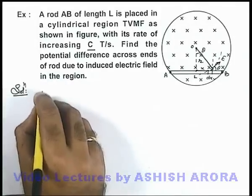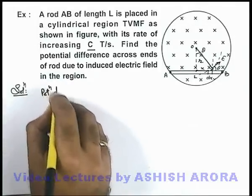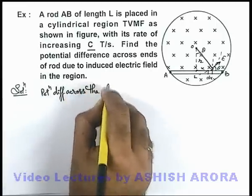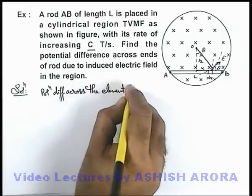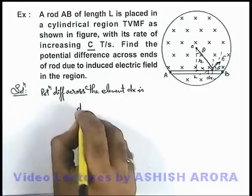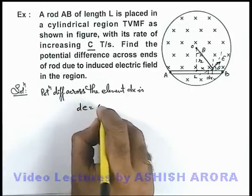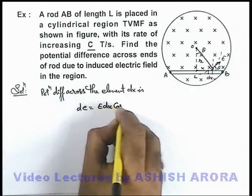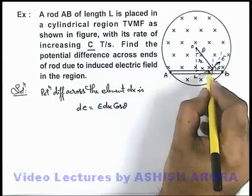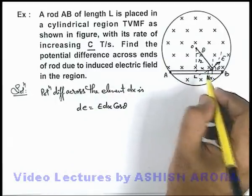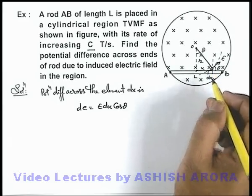In this situation, potential difference across the element dx is dE. This we can write as E dx cos theta, because across two points where electric field is E, we can write the potential difference dV as E dot dx, so it will be E dx cos theta.